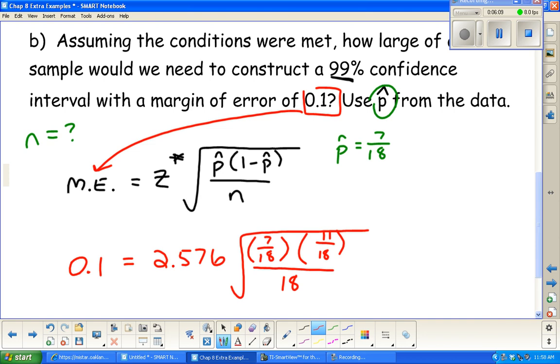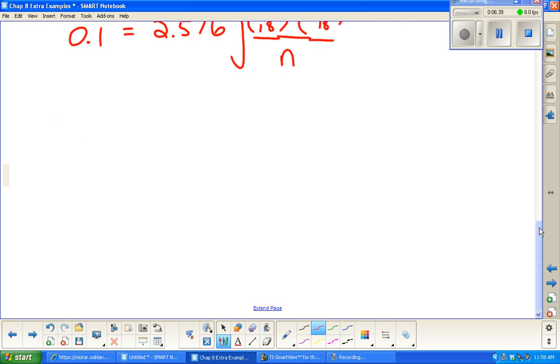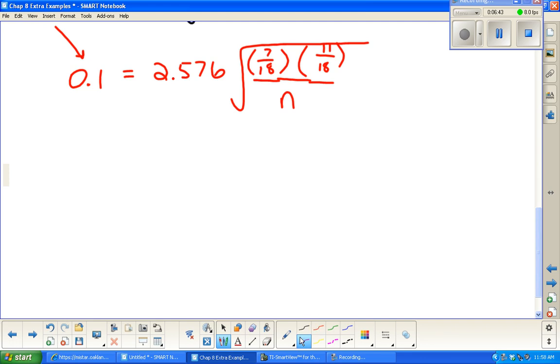The square root of P hat, I'm going to keep these as fractions, 7 18ths. 1 minus P hat would be 11 18ths. Our sample size N was... I'm sorry, let me catch myself there. 18 was the sample we had. We're doing a different type problem. We are trying to find out what sample size we need in order for the margin of error to be 0.1, so don't fall into that trap. Pretend like we don't know N because that's what we want to find. Let's divide both sides by the 2.576.